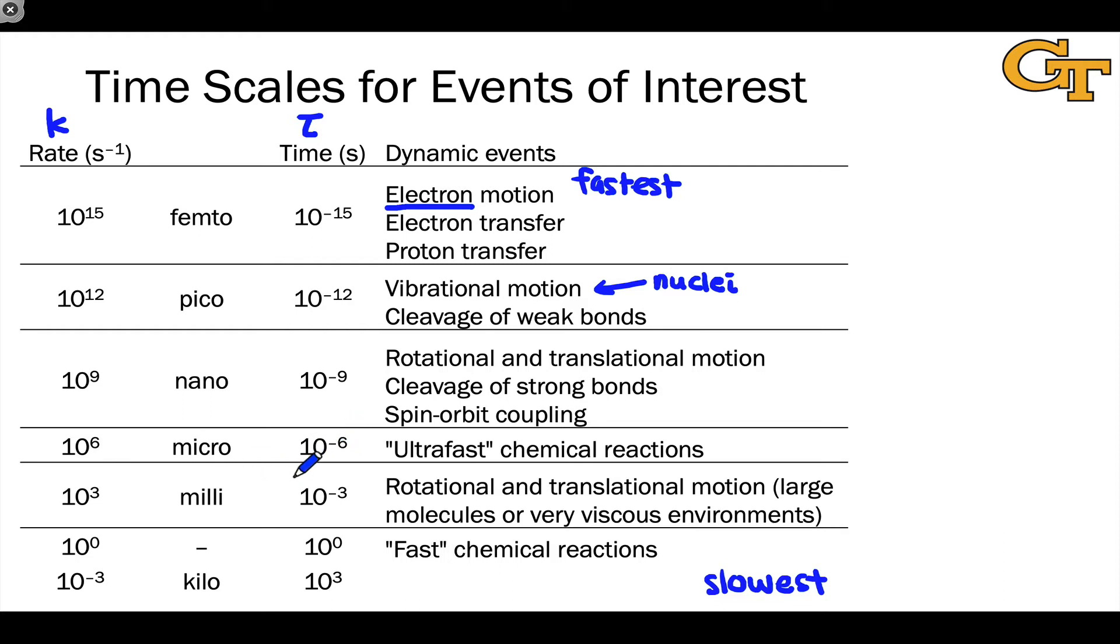Milliseconds, we're talking about in viscous environments, or for very large molecules, things like proteins. Rotational and translational motions can be on the order of milliseconds. And then, right around one per second, we're talking about fast chemical reactions.